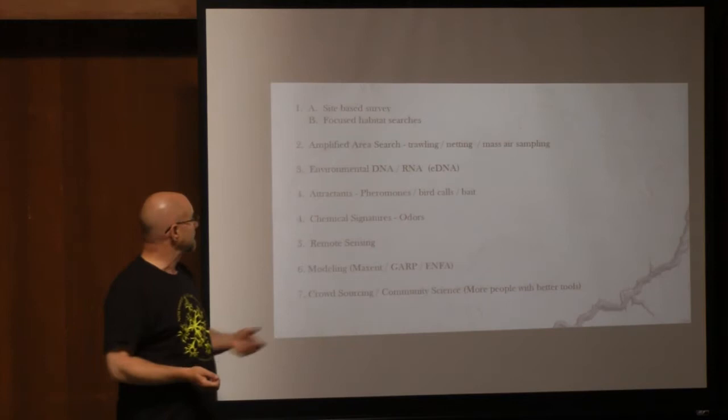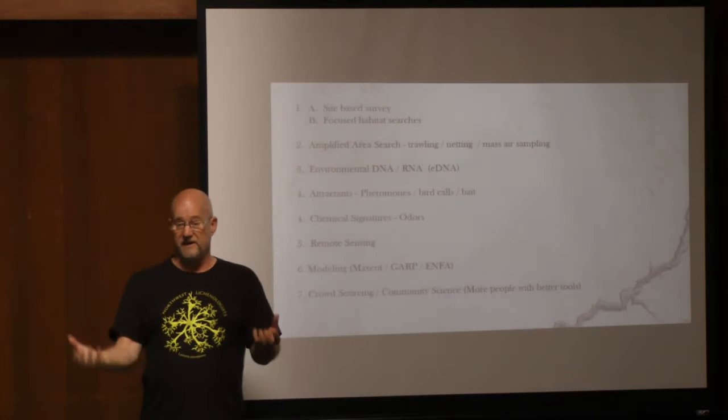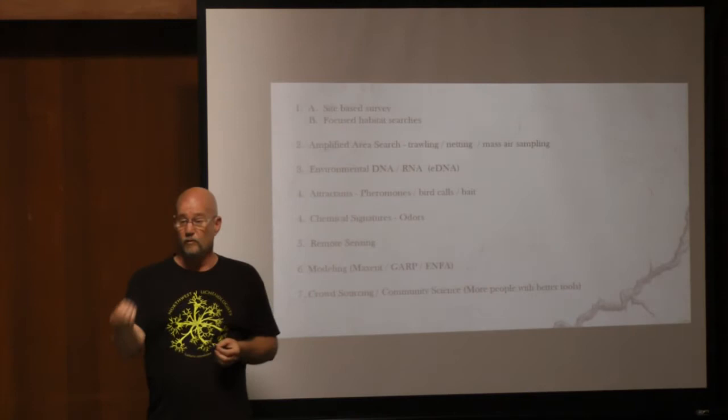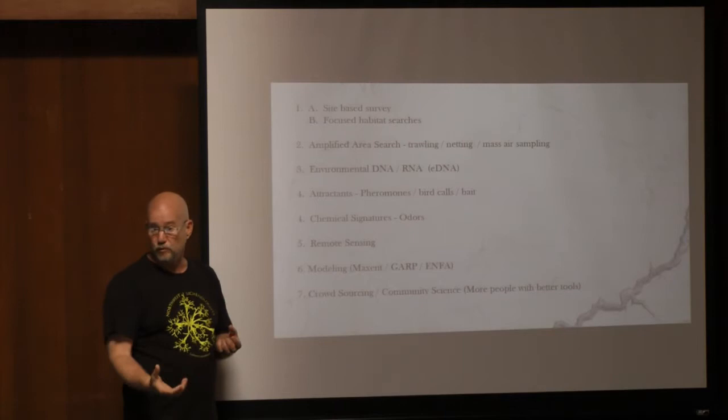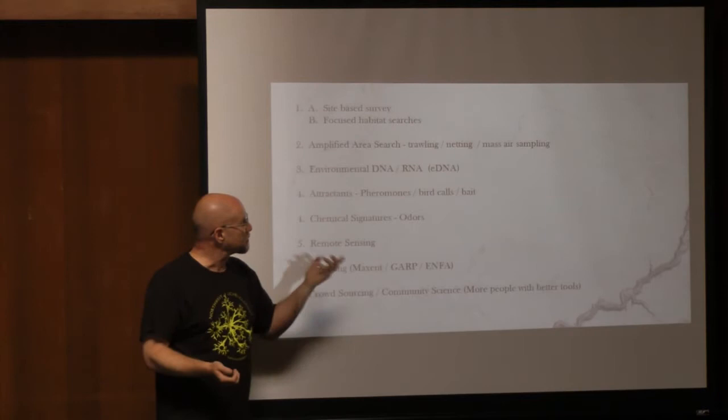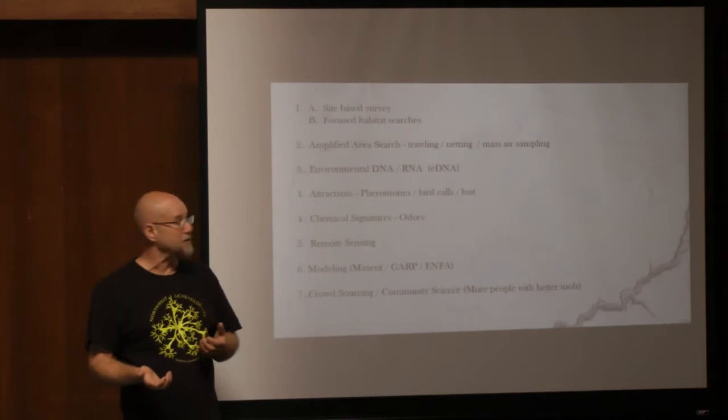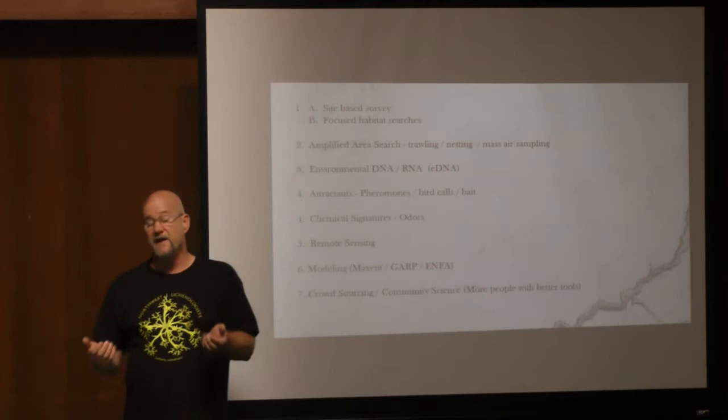Environmental DNA becomes a very powerful tool for determining what is in an area — regardless of whether something is huge like an elephant or small like our snail, or even smaller. Attractants: pheromones, bird calls, bait. These are very good for big things, and may not be quite as good for some of the small things. Certainly pheromones work for attracting insects, and we'll talk about that in just a couple more slides.